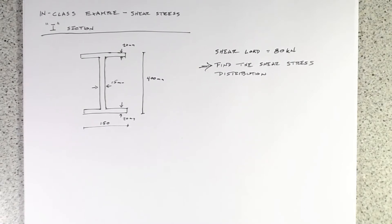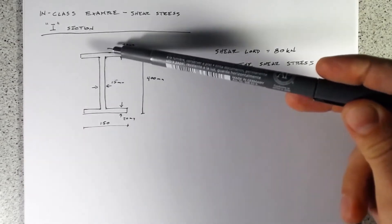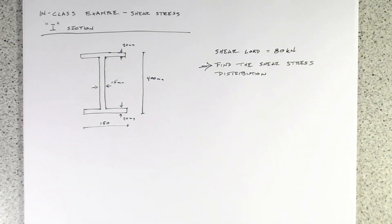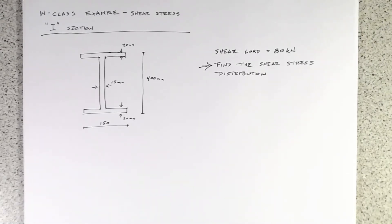Just like with the previous T-beam example, we need to find the shear stress distribution, but we're going to find it in two different ways. The first way is purely mathematical — we'll come up with an equation which gives the shear stress distribution based on distance y from the centroid. The second method is more of an engineering method, where we find the shear stress at particular points, using the knowledge that for a rectangular member where shear stress is applied parallel to an axis of symmetry, we'll have a parabolic distribution.